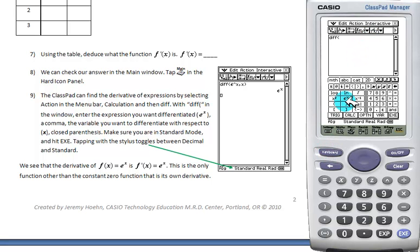Now we have to enter e to the x again, comma, and with respect to x. Hit EXE, and we get derivative of e to the x is e to the x.